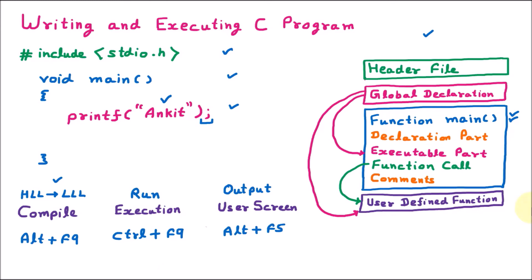There are three steps which we have followed. The first step was compile, then the second step was execution, and the third step was the output or user screen. Every step has its own command. For compilation we have Alt F9, for execution we have Ctrl plus F9, and for the user screen we have Alt plus F5.